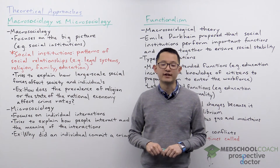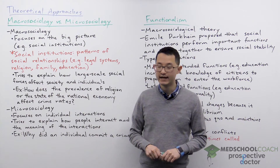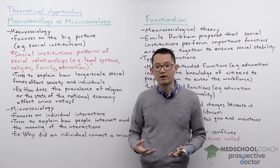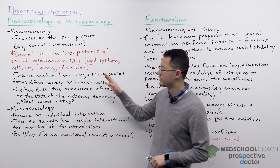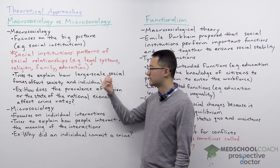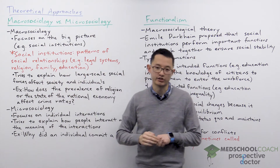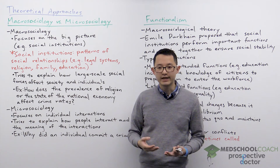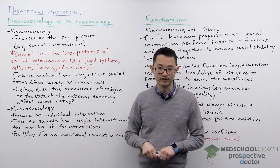Macro sociology and micro sociology are two different perspectives for studying society. Macro sociology takes the big-picture view of society and focuses on topics such as social institutions. Social institutions are patterns of social relationships, and examples include the legal system, religion, family, and education. What macro sociologists try to do is explain how these large-scale social forces affect society and individuals.